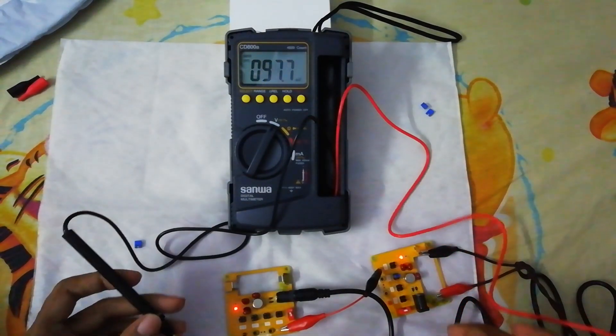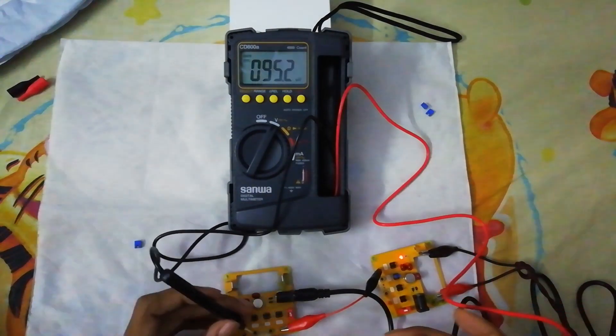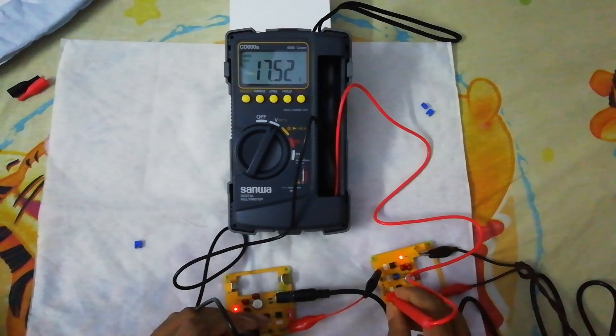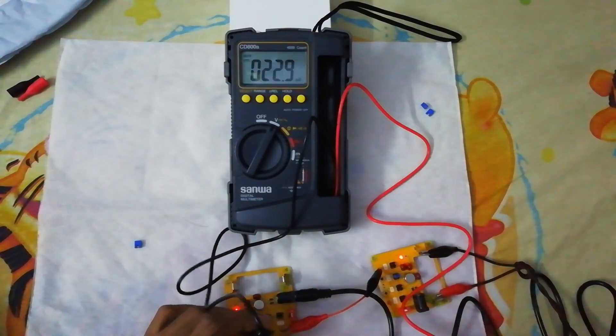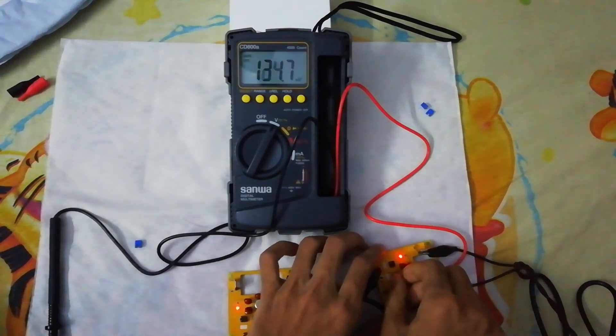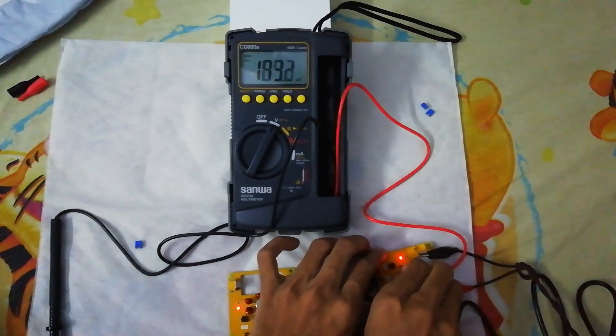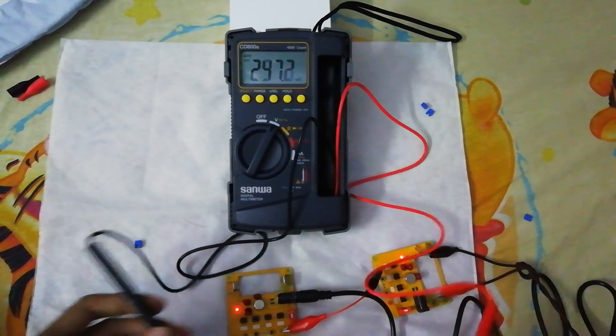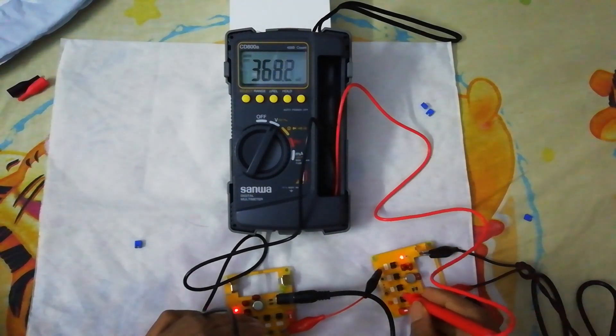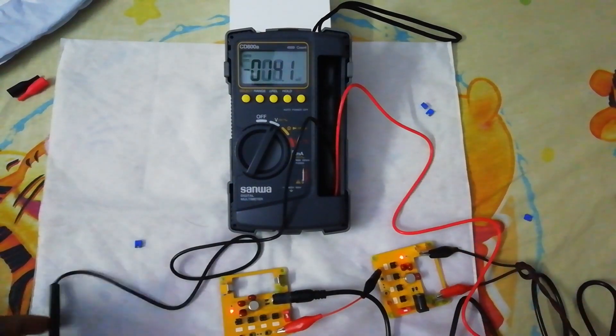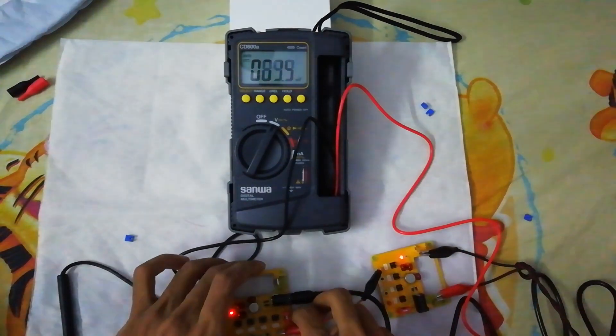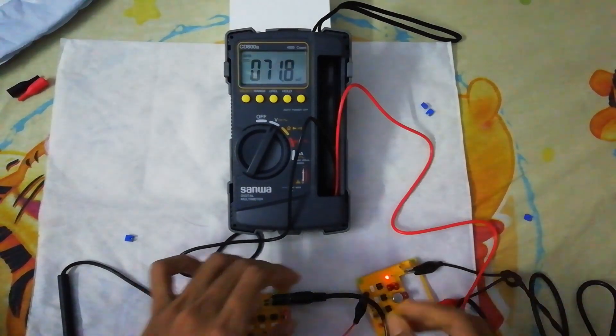7.5 plus 10.00, 17.51, that's nice. Then 20.00 I have tested this earlier, now check this again. 20.01, yeah that's nice. Okay, let's disconnect these two.